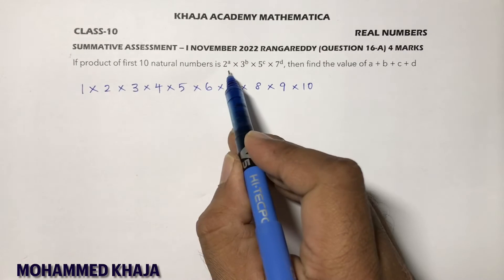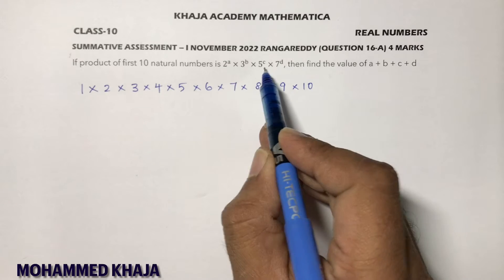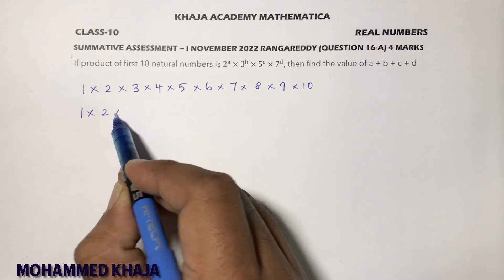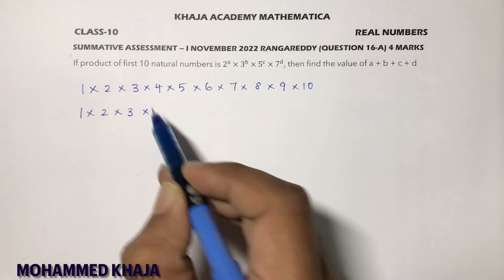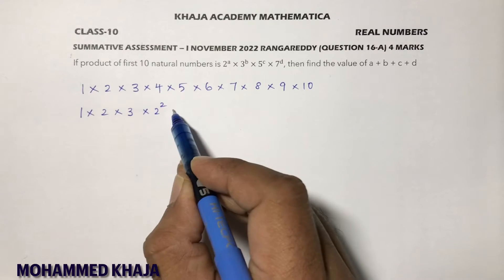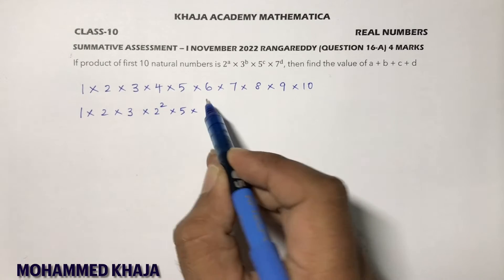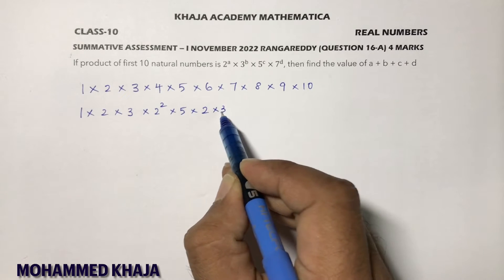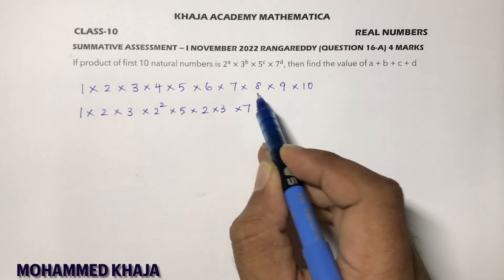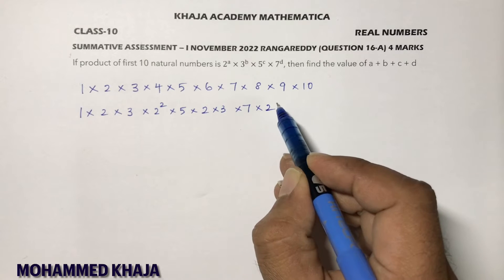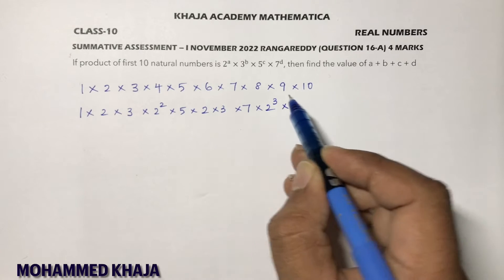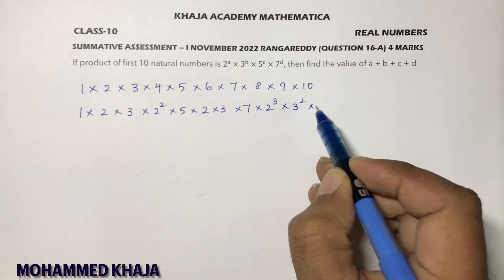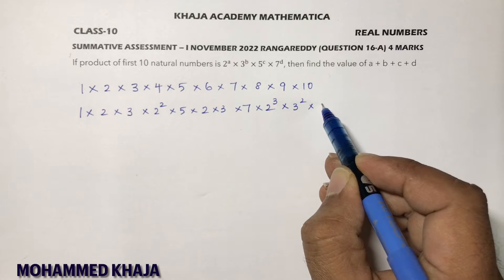I'll change all the natural numbers in terms of 2, 3, 5 and 7. So 1 × 2 × 3 × 4 as 2² × 5, 6 as 2×3, 7 as is, 8 is 2³, 9 is 3², and 10 is 2×5.